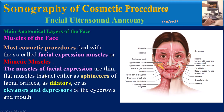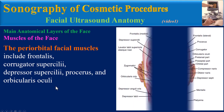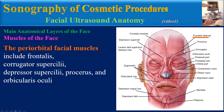Muscles of the face: most cosmetic procedures deal with the so-called facial expression muscles, or mimetic muscles. These muscles are thin, flat muscles that act either as sphincters of facial orifices, as dilators, or as elevators and depressors of the eyebrows and mouth. General familiarity with them can be helpful in ultrasound examinations. We can divide the facial expression muscles into four groups. The first group is the periorbital facial muscles.